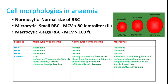Hypochromic means the color of the blood cells is reduced, which normally occurs in iron deficiency anemia. Microcytic hypochromic means both size and color are reduced — classical features of iron deficiency anemia. In microcytic hypochromic anemia, MCV, MCH, and MCHC are all decreased. The commonest cause is iron deficiency anemia; other causes are thalassemia, sideroblastic anemia, chronic disease-induced anemia, and lead poisoning.